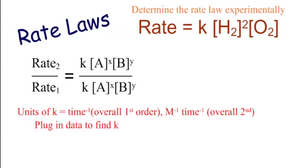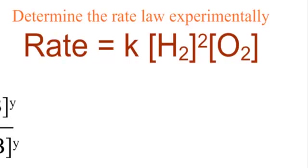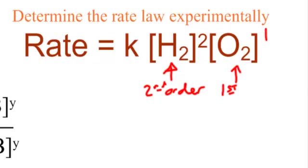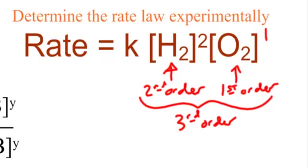So how do we find these orders? That's done by finding the rate law. The rate law looks like: rate = K × [H₂]² × [O₂]¹. That would be second order with respect to hydrogen gas and first order with respect to oxygen gas. We always determine the rate law experimentally. Overall, it is third order — 2 plus 1 equals 3.